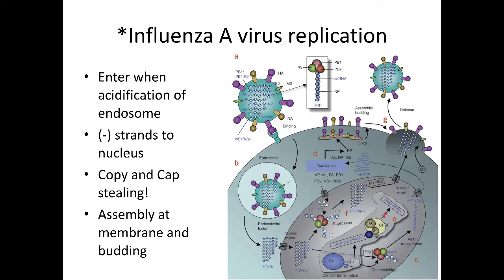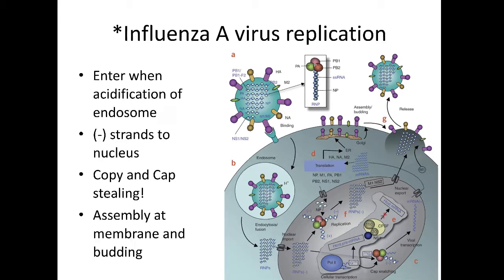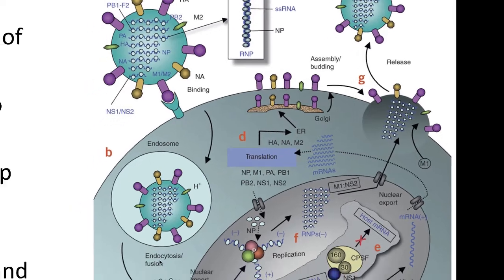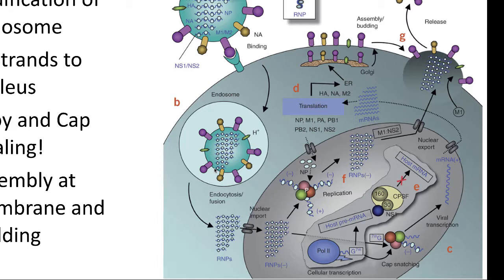The influenza virus enters during acidification of the endosome. It binds to its receptor, which is sialic acid — a receptor found on many different organisms, including birds and mammals. You'll find it in humans, pigs, and a number of different bird species, and that will become important later. It binds the sialic acid receptor and is taken into an endosome by the usual endocytotic pathway. When the pH begins to drop — before a lysosome interacts with the endosome — this drop in pH causes it to bind to the membrane, then uncoat and dump the single-stranded RNAs into the cytoplasm.